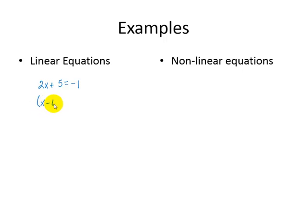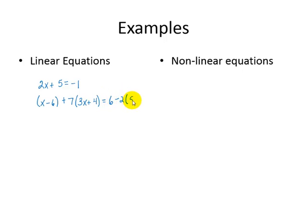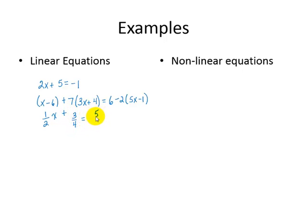x minus 6 plus 7 times 3x plus 4 equals 6 minus 2 times 5x minus 1. And one-half x plus three-fourths is equal to five-eighths x.